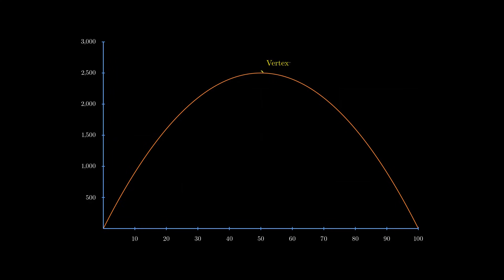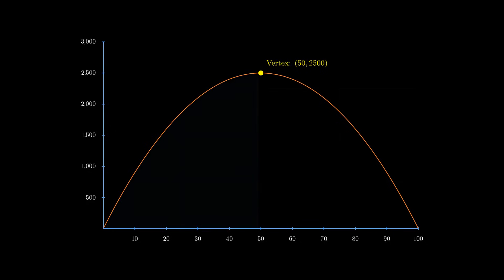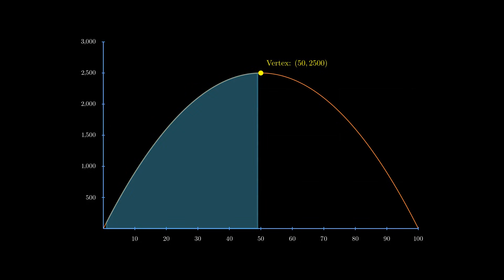The vertex is at k equals 50, where the function hits its absolute maximum of 2500. But wait, our value for k only goes from 1 to 49. And as you can see from the graph, in this range the function is still increasing.